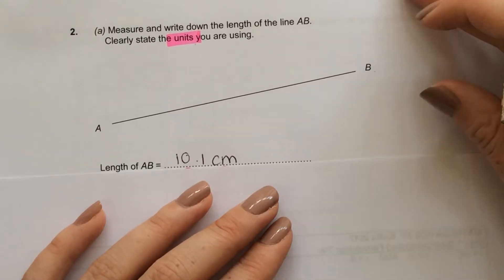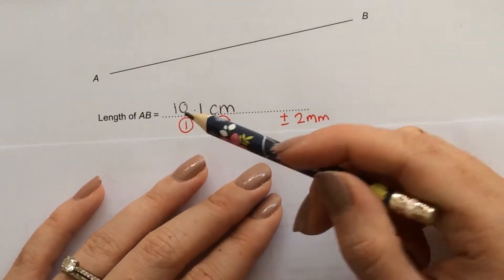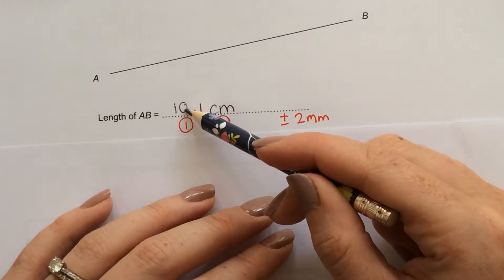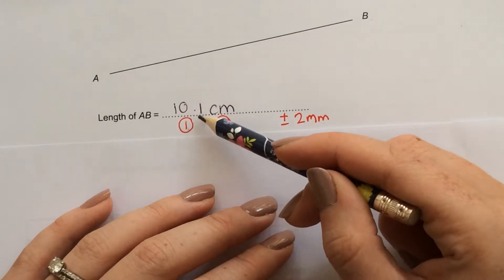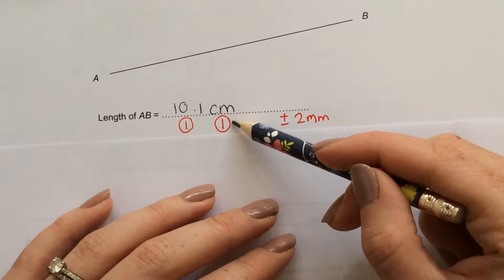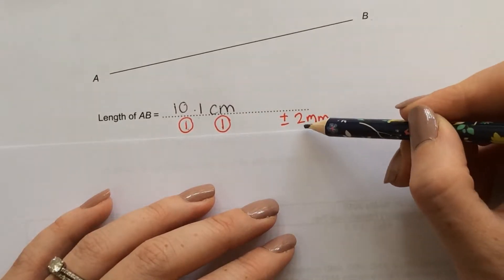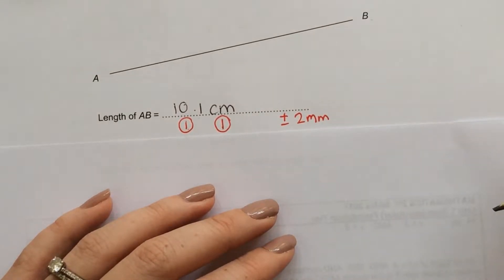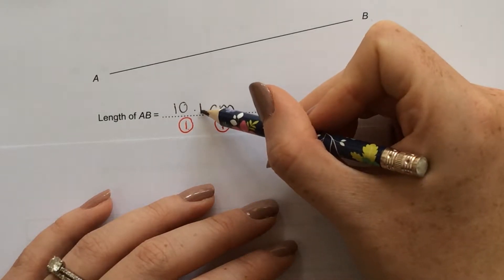Now, you get one mark for having the measurement correct, and one mark for the units. Now, you're allowed 2 millimetres either side, so plus 2 millimetres or minus 2 millimetres to have the answer correct. So if you measured yours and came up with 10.1, 10.2, 10.3, either one of those, then you will be correct.